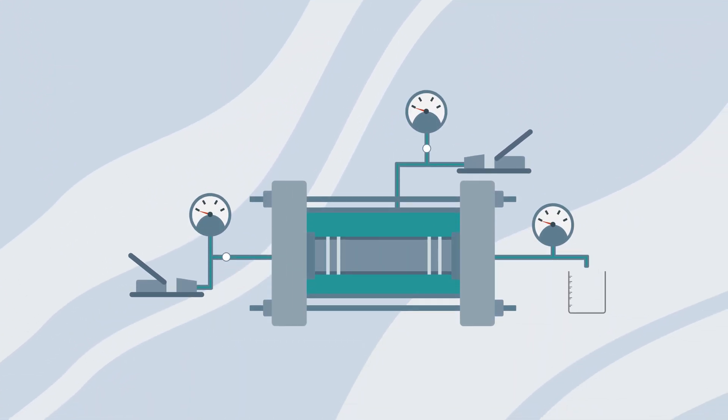Secondly, we insert the core sample in the core holder as shown here. Before injecting the water, we need to ensure that the confining pressure that is squeezing the core sample from all sides is applied. This is done in order to guarantee that the water is only going through the core sample and not bypassing it, as that will generate errors in the measurement.